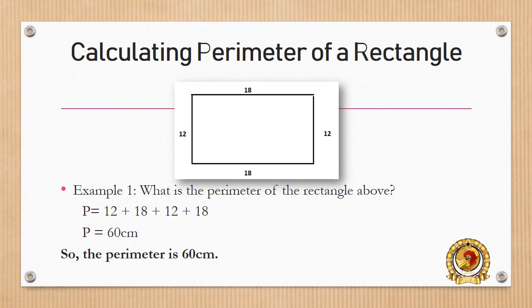So P, which is perimeter, equals 12 plus 18 plus 12 plus 18. So the perimeter of this rectangle is 60 cm.